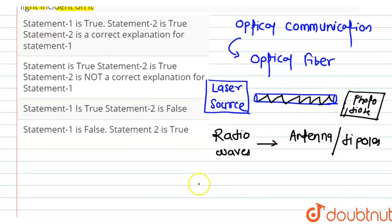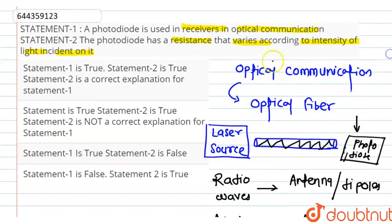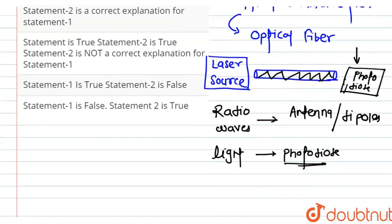But light is received by only photodiode. And hence, photodiode will act as a receiver in optical communication because photodiode is a light activated device.